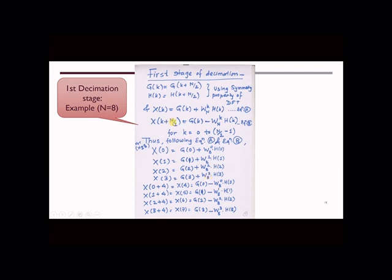From equation b, we can infer the higher order values of x of k, that is from x of 4 up till x of 7, which according to this equation b, we are simply going to obtain by changing the additions from the first set of equations by subtraction operator. You could see that all the terms remain the same, only the addition is getting replaced with the subtraction.